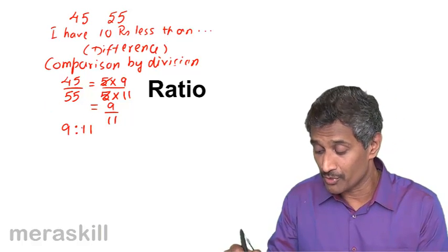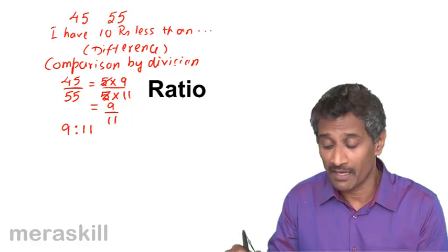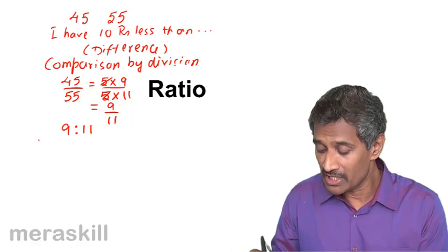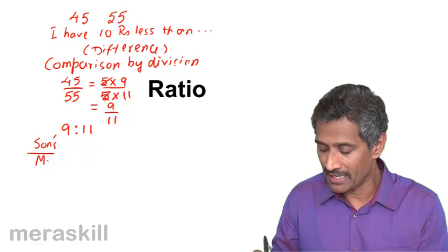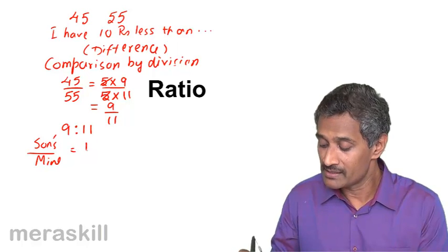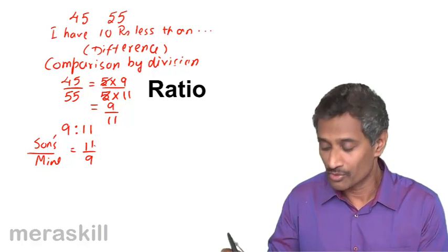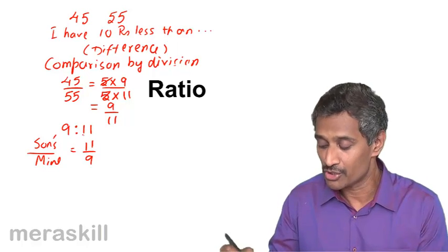And the inverse ratio, remember the terms are very important here. The ratio of my son's amount to my amount is 11 is to 9. So this becomes the inverse ratio of this.